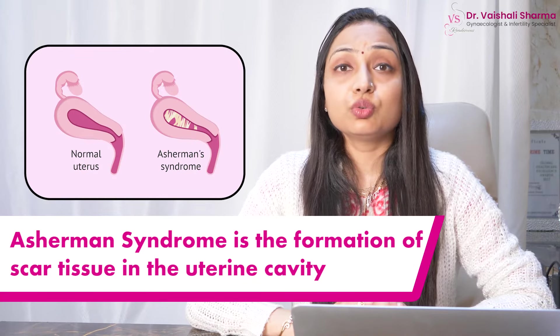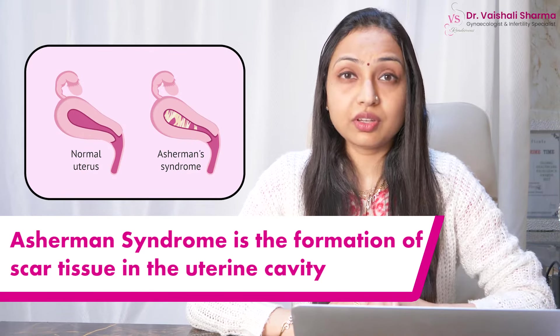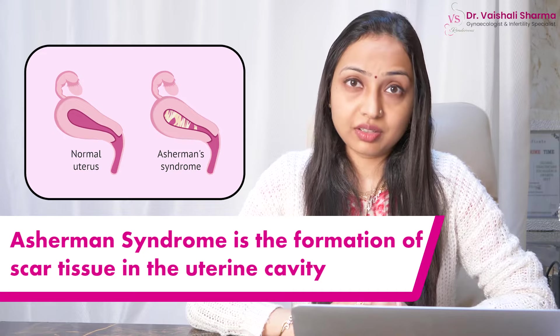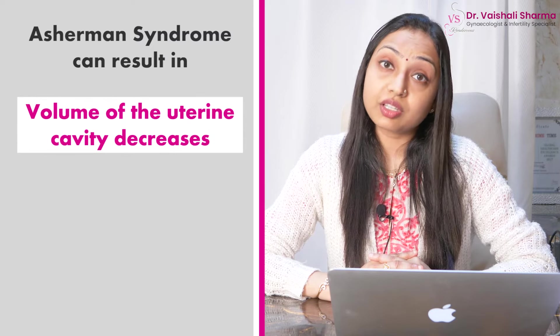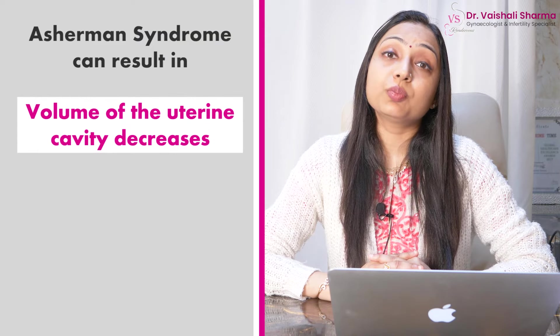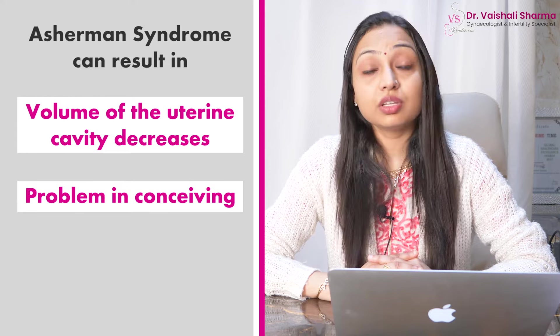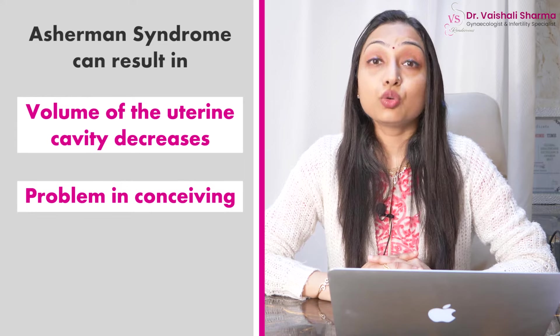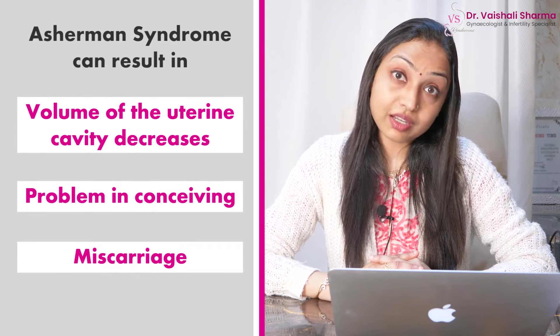In Asherman's Syndrome, what happens is that the lining of the uterus gets scarred and the volume of the uterine cavity is reduced. When they try to get pregnant, they don't conceive. Or if pregnancy does occur, they get a miscarriage.